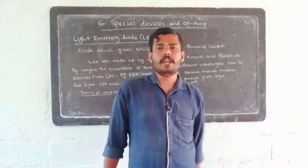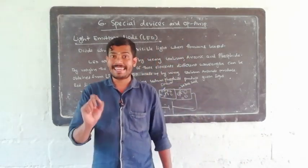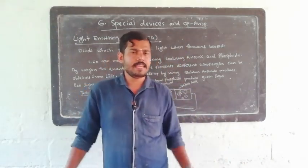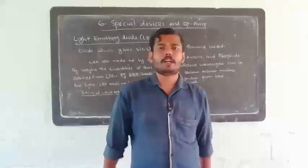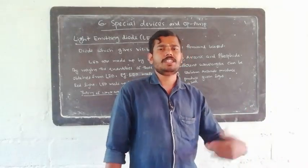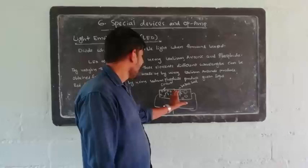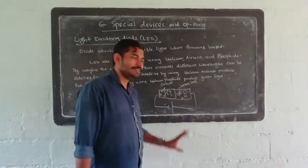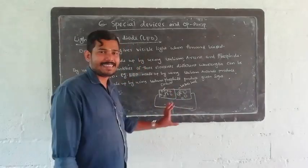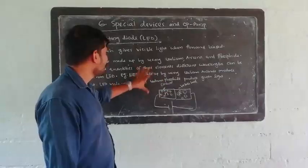In an ordinary diode, the energy released when electrons combine with holes is lost in the form of heat only. But in LED, light is given off. This is the LED working theory.